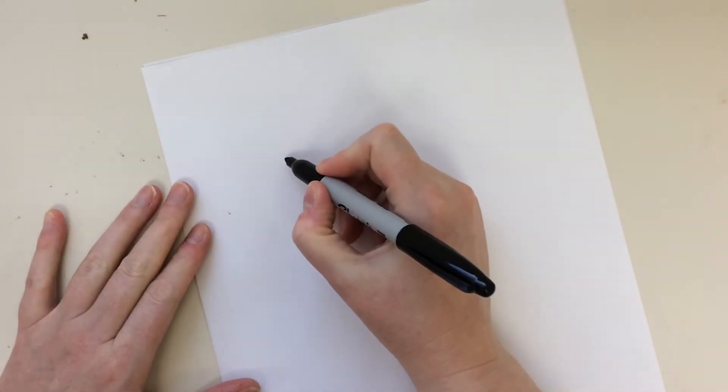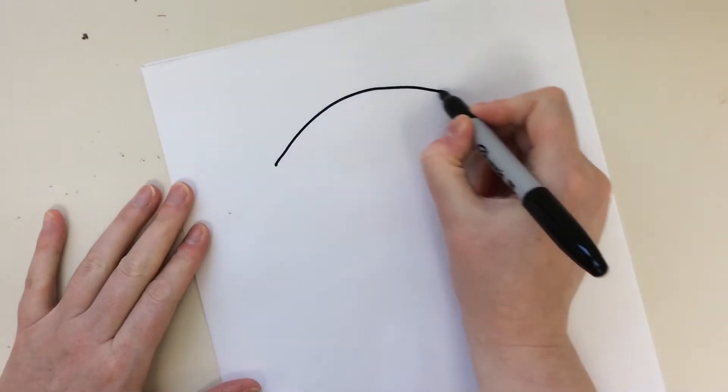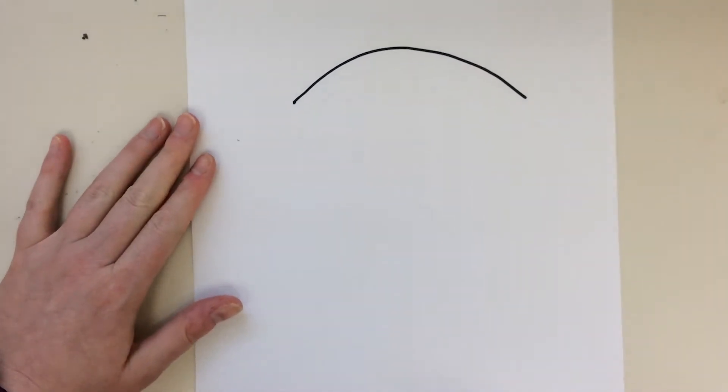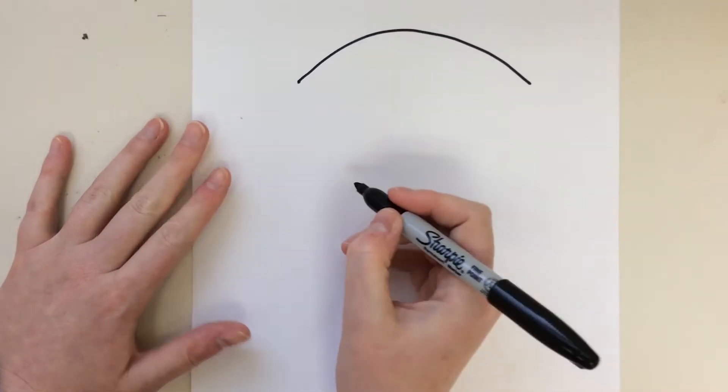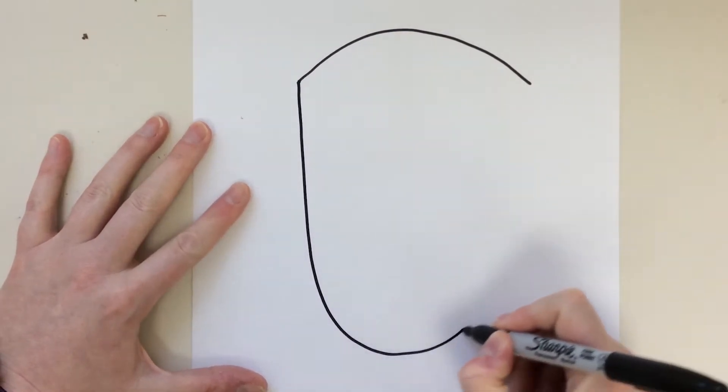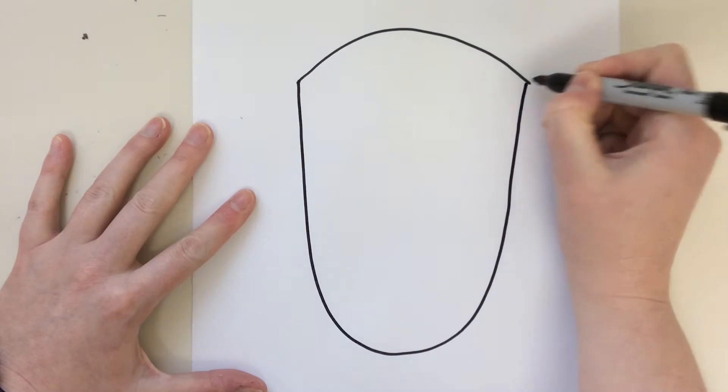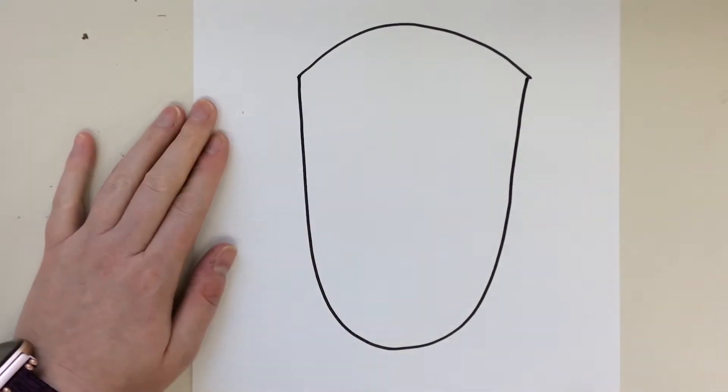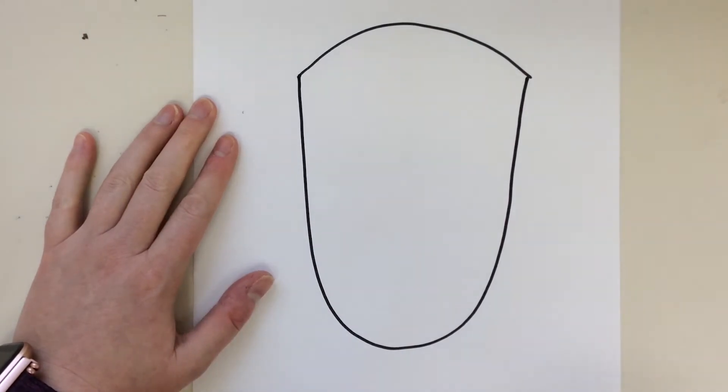The first thing we want to do is at the top of our paper, make a nice big curved line. That's going to be the top of our owl. Then under that, I'm going to make the biggest giant capital U underneath it. This is the body for our owl.